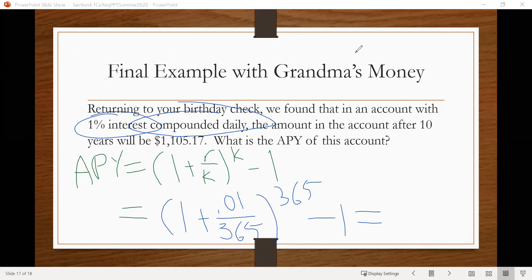We'll again plug this all into the calculator all at once, being very careful to use parentheses. And when we do that, I get 0.01005, which if I convert that back into a percentage, let's move the decimal over two places, we get 1.005%.